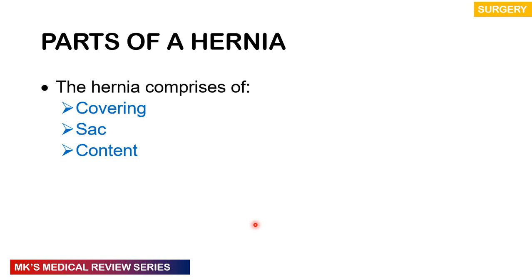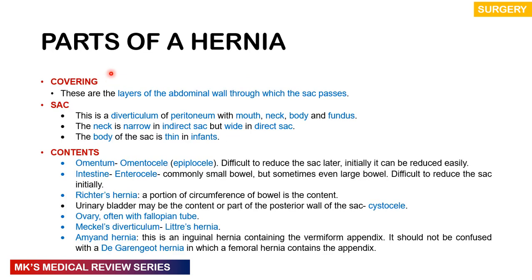Hernias are going to comprise of a covering, a sac, and contents. The covering is pretty much the layers of the abdomen through which the sac passes. The sac itself is a diverticulum or outpouching of the peritoneum, which has a mouth, a neck, a body, and a fundus. The neck may either be narrow — as in indirect inguinal hernias, which have a high risk of strangulation — or wide, as in direct inguinal hernias.